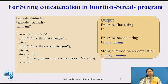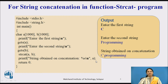We print a prompt and take the first string using gets(a), then take the second string using gets(b). Then we call the library function strcat(a, b). After that, we print the string — the result after joining a and b is stored into a, that is, the first string. Then return 0.